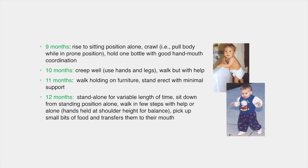Nine to twelve months is where mobility comes into play. At nine months, the infant can rise to a sitting position alone and crawl. At ten months, they creep well using hands and legs and may be able to walk with some help. At eleven months, they can walk holding onto furniture and stand erect with minimal support. At twelve months, they can stand alone, sit down from a standing position alone, walk a few steps with help or alone with hands held at shoulder height for balance, and pick up small bits of food and transfer them to their mouth independently.